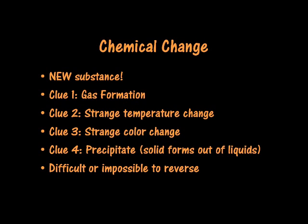Chemical changes do create completely new substances. Chemical changes include burning, rusting, fireworks, and anything that makes a new substance. You have to look for signs or clues of a chemical change. They include a gas being formed, an unexpected temperature change either hot or cold, an unexpected or strange color change, or the formation of a precipitate, which is a solid that's created when you mix liquids together. Something new is always created out of a chemical change. Chemical changes are usually very difficult or impossible to reverse or change back. Please pause the video, write down these notes, and make sure you understand everything in this video. If you have any questions, please ask your teacher. Good job, everybody!